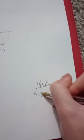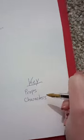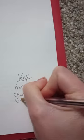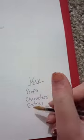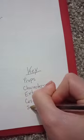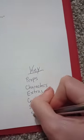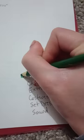Make a list of important things that are found in your script, such as props, characters, extras, costumes, set dressing, sound, and any other information that may be vital to your story and script.